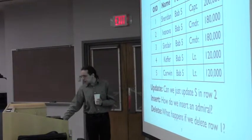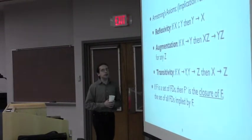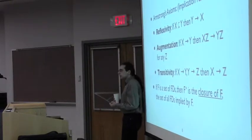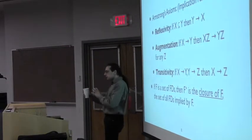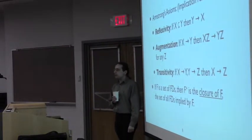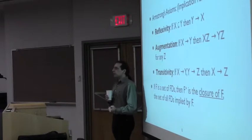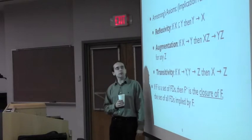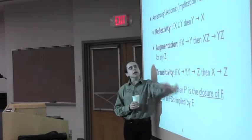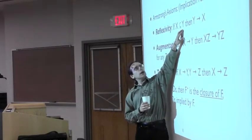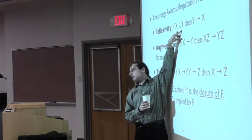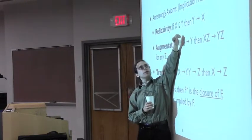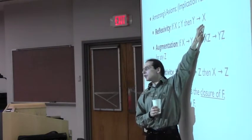These functional dependencies are something we can manipulate — just like we manipulate relational algebra and rewrite it to come up with new expressions. We can do something similar for functional dependencies. For example, if we have two sets of attributes and one is a subset of the other, there is always going to be a functional dependency from the bigger set to the smaller set.